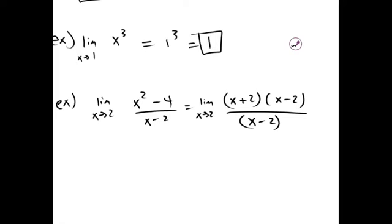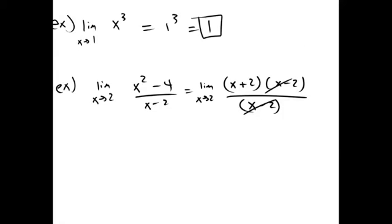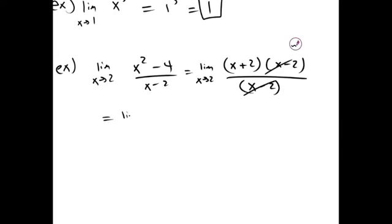And since we have an x minus 2 on the top and bottom, those can cancel, and we'll get the limit as x approaches 2 of x plus 2, which is just 2 plus 2, which is 4.